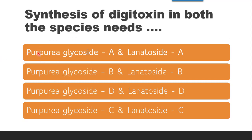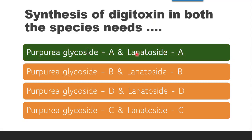Next: synthesis of digitoxin in both species needs which precursors? Digitoxin is the very first product produced. Considering both species — Digitalis purpurea needs purpurea glycoside A as a precursor, and Digitalis lanata needs lanatoside A as a precursor, since digitoxin is the first product formed. So the correct answer is purpurea glycoside A and lanatoside A.